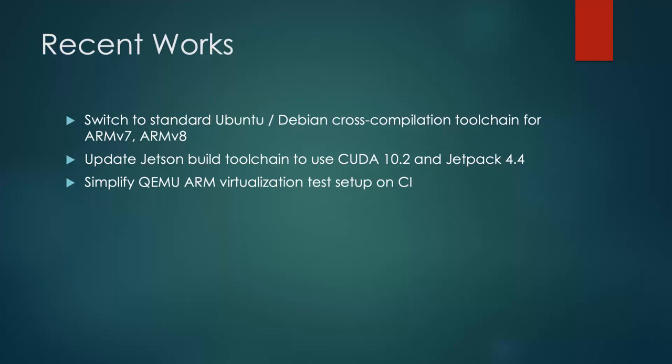Recent works with respect to ARM support in MXNet include toolchain updates for different architectures. This year, we switched to standard Debian cross-compilation toolchain for ARM v7 and v8. We updated the Jetson build toolchain to use CUDA 10.2 and Jetpack 4.4. QEMU-based ARM virtualization test setup was also simplified to run in less than two minutes.